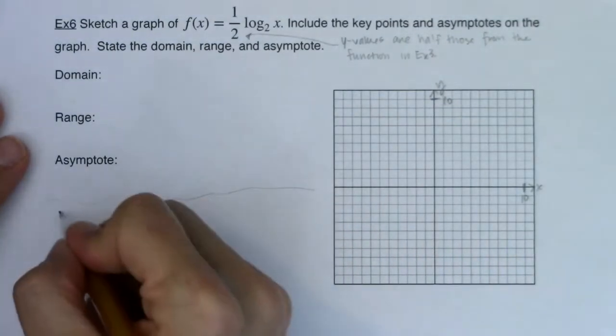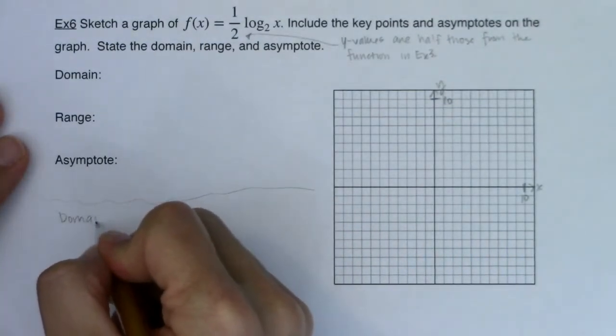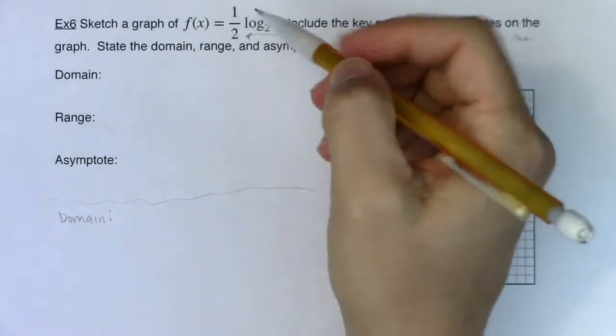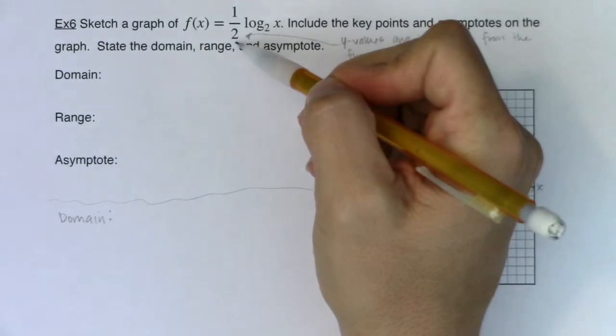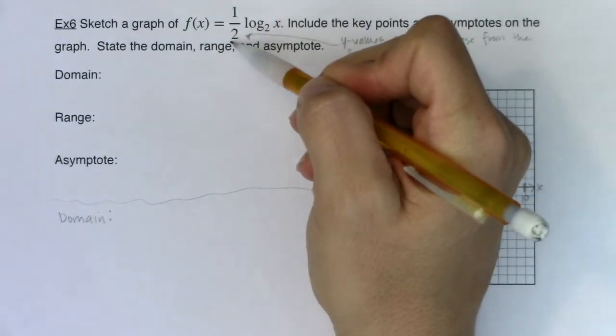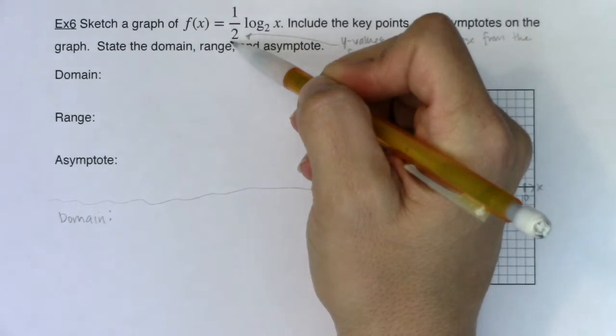So domain. I do have a fraction but my denominator is never 0 because my denominator is always 2. There's no x variable down here in the denominator so it doesn't actually present a domain issue for me.